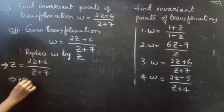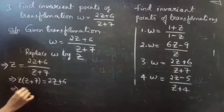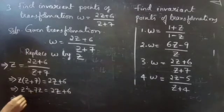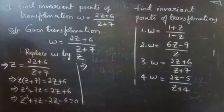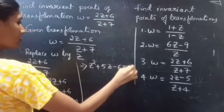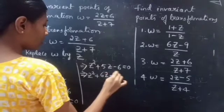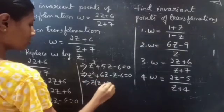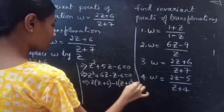From this we will get z into z plus 7 equals to 2z plus 6. So z squared plus 7z equals to 2z plus 6. Now take these two terms to the left hand side. We will get z squared plus 7z minus 2z minus 6 equals to 0. This implies z squared plus 5z minus 6 equals to 0. You can write it as z squared plus 6z minus z minus 6 equals to 0. Take z common from the first two terms: z into z plus 6. Take minus 1 common from the next two terms: minus 1 into z plus 6.